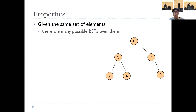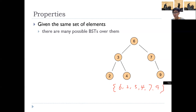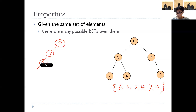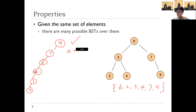Given the same set of key values, there can be many possible binary search trees built upon them. For example, here is a valid binary search tree defined over the elements six, two, three, four, seven, nine. Here is another valid binary search tree for the same elements: nine, seven, six, four, three, two — essentially a path where all nodes have only a left child and the right child is empty.